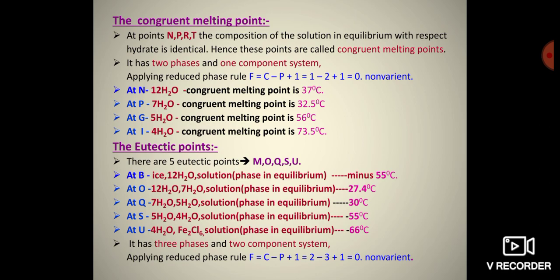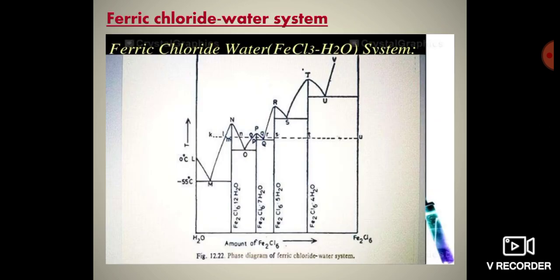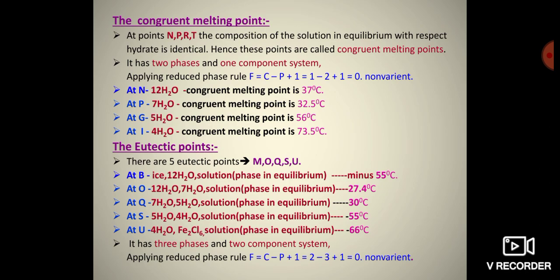There are five eutectic points in this phase diagram: M, O, Q, S, and U. At M, the three phases are ice, Fe₂Cl₆·12H₂O, and solution, at a temperature of −55°C.